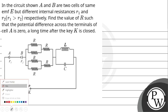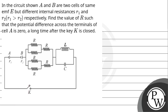Hello Bachcho, let us read the question. In the circuit shown, A and B are two cells of same EMF but different internal resistances R1 and R2, where R1 is greater than R2. Find the value of R such that the potential difference across the terminals of cell A is zero a long time after the key is closed.